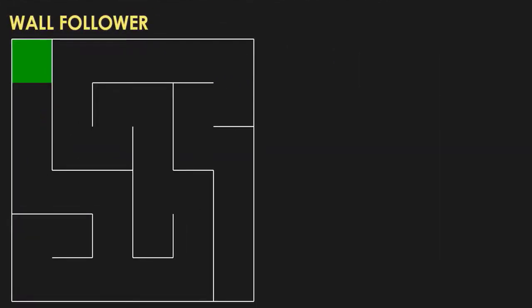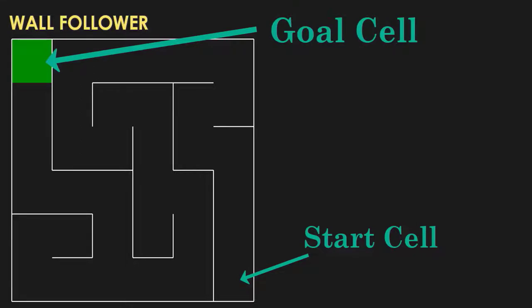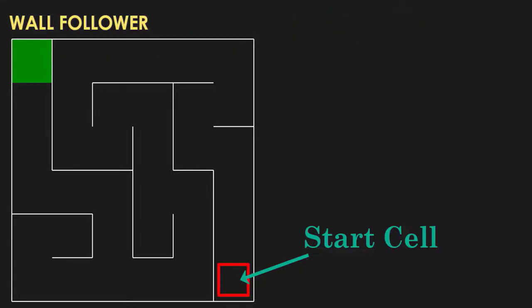Let's first see how the wall following algorithm works. This is the maze we will consider to understand the algorithm. This is the start cell and this is the exit, or the goal cell. Consider yourself stuck in this cell and you have to reach the goal cell. The wall following algorithm says that you should stick to a wall and just keep following that wall, and you will eventually reach the exit, provided there is a path to the exit. You can follow the right wall or the left wall.